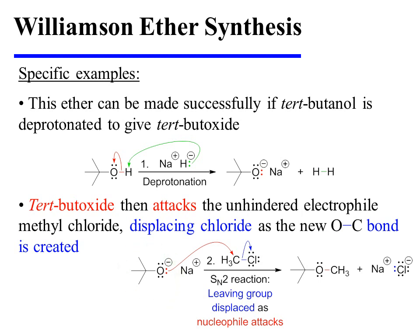In the second step of the reaction, tert-butoxide is treated with methyl chloride. The alkoxide attacks this unhindered methyl carbon, displacing chloride and yielding our MTBE product.